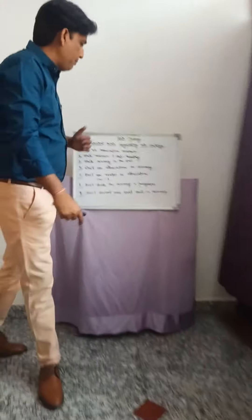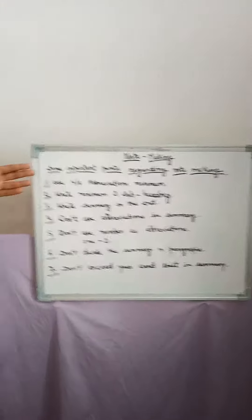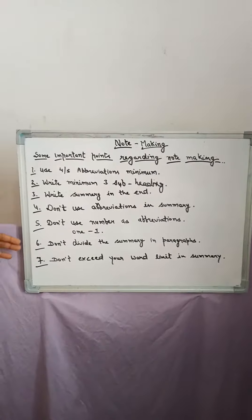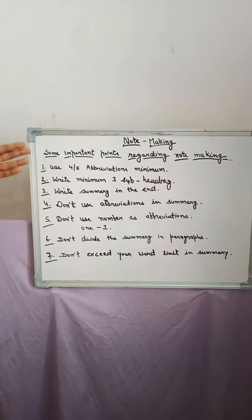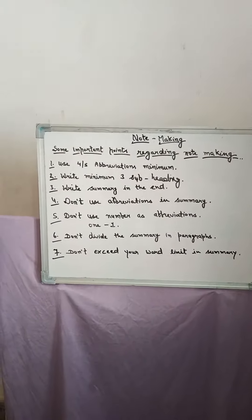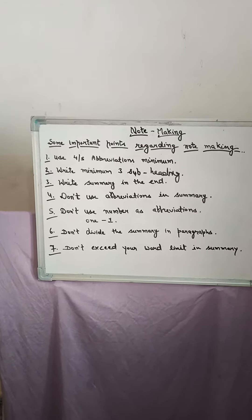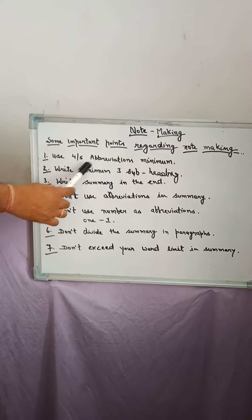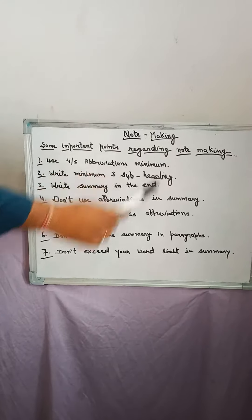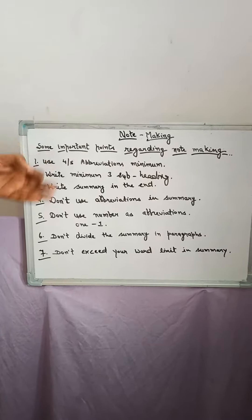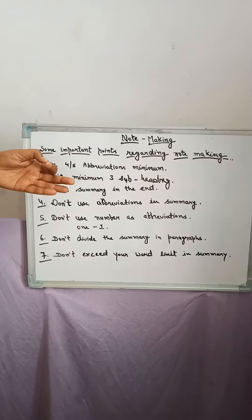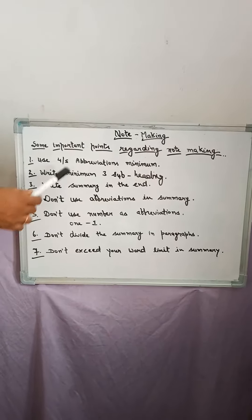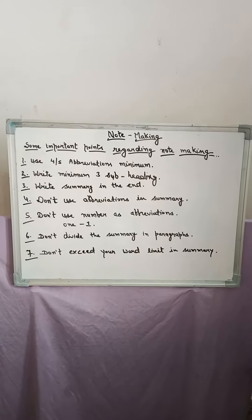So students, look at the blackboard. These are the seven points of notemaking. My first point is: use four to five abbreviations minimum. When you make notes, use four to five abbreviations minimum.